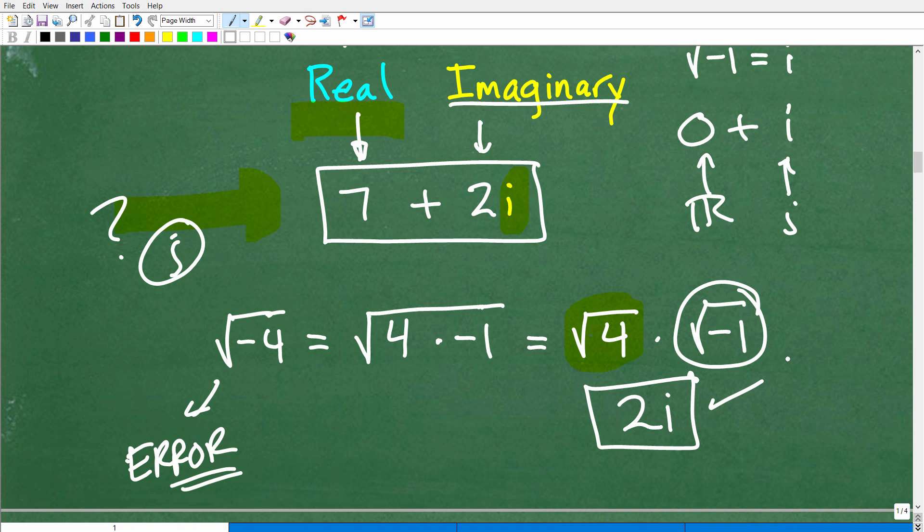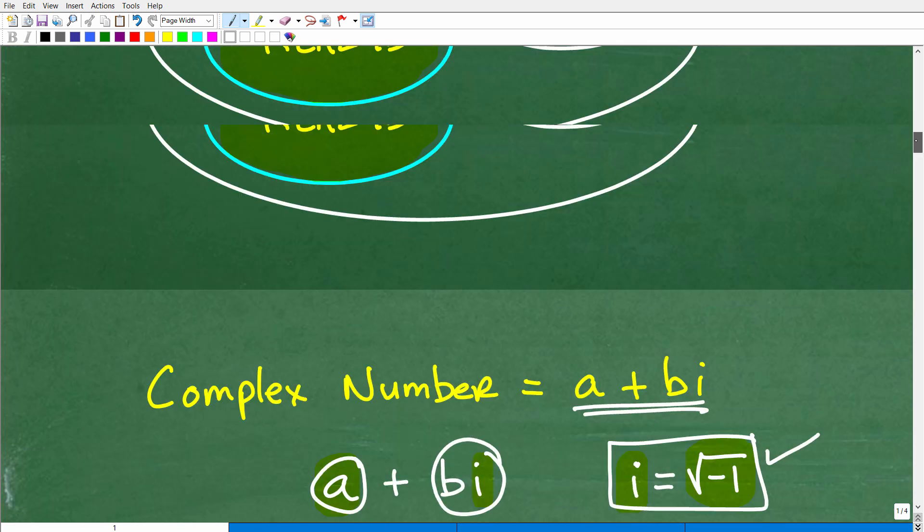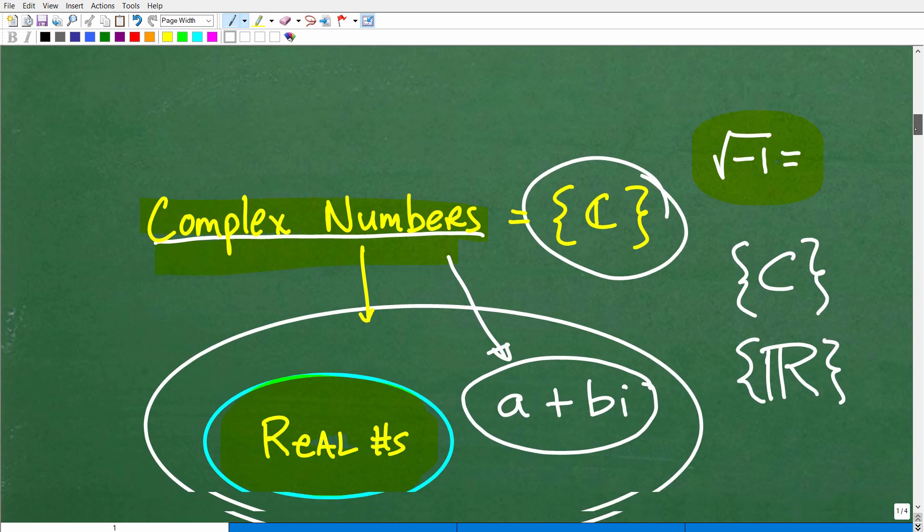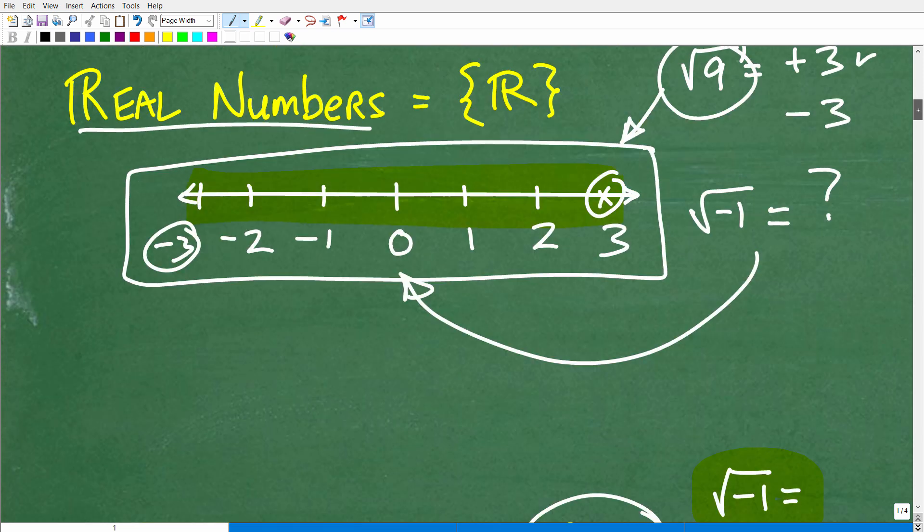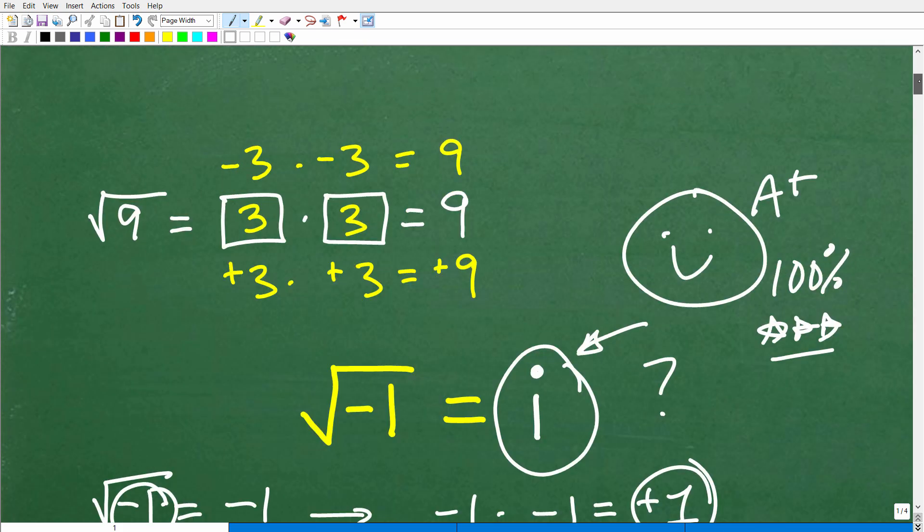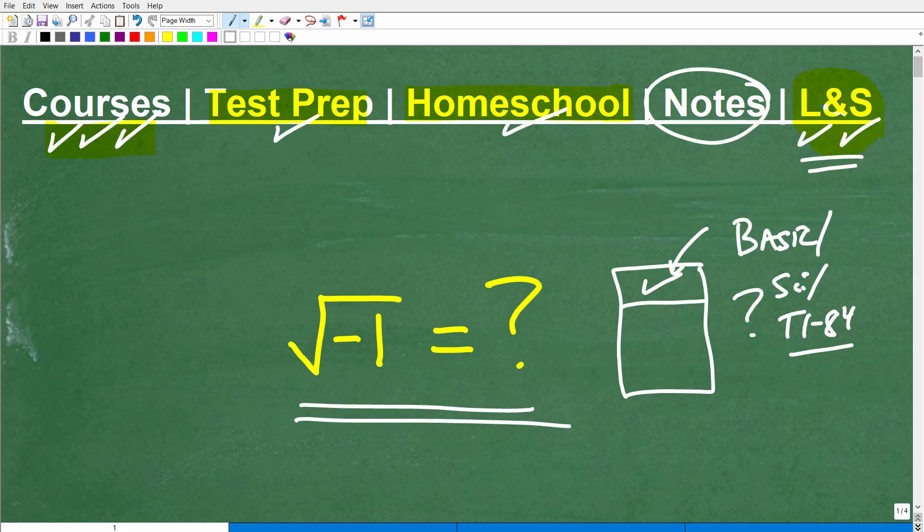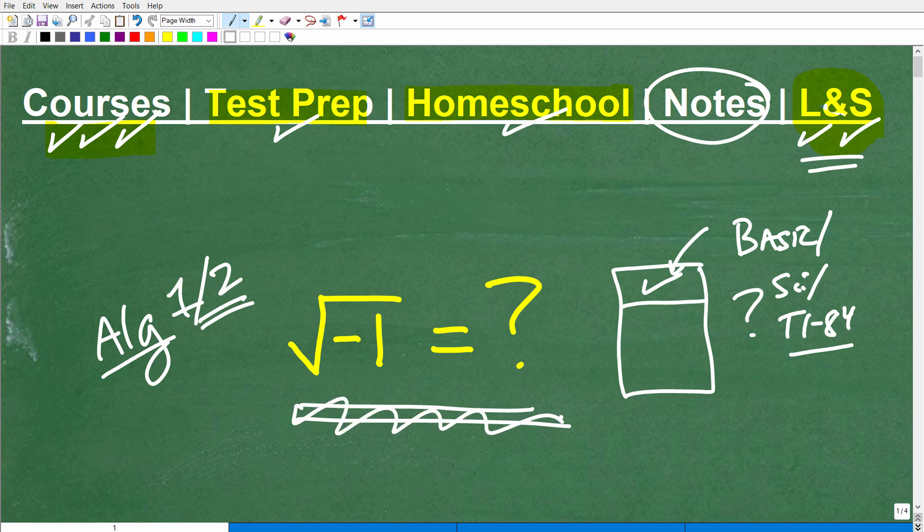All right, so that's a quick introduction to complex numbers and how they relate to the real number system. So you pretty much start seeing the complex numbers in any course. Well, you might kind of get a quick introduction into like, let's say, a first-year algebra course, something like algebra one. But definitely as you get into algebra two, college algebra is certainly pre-calculus.